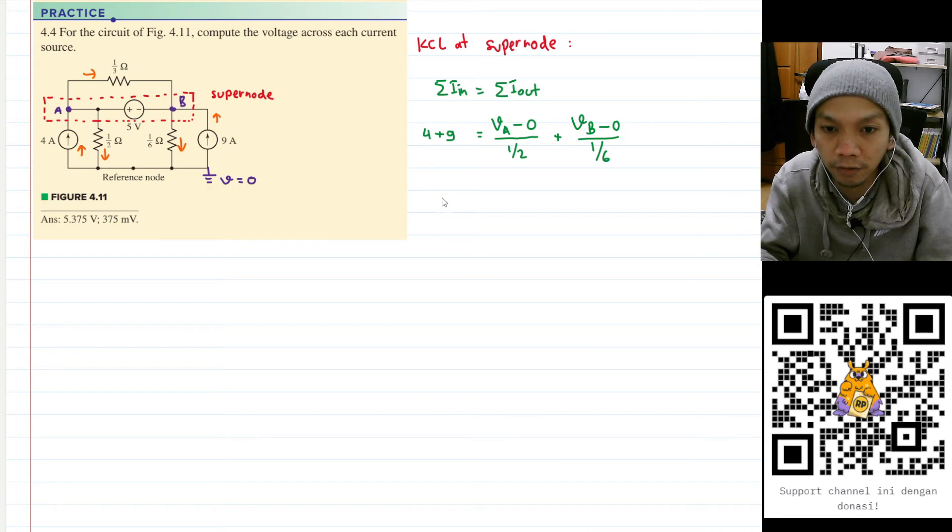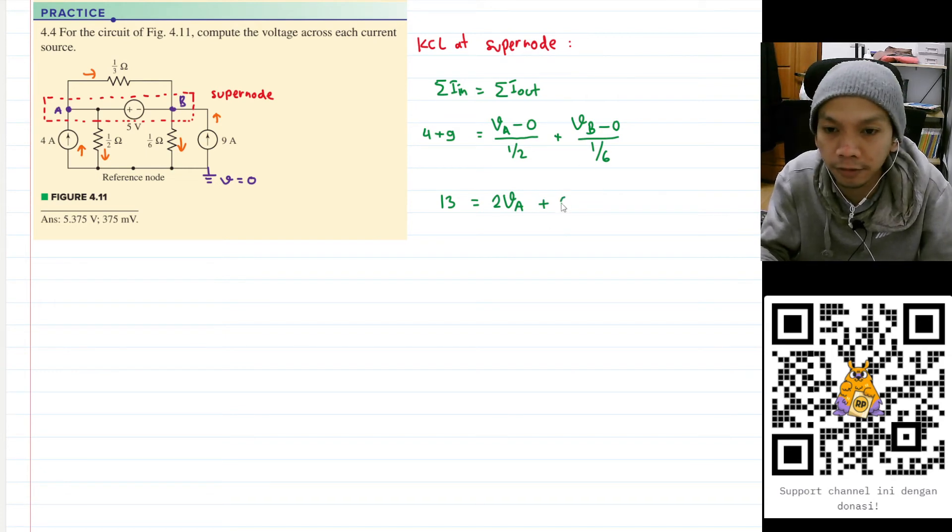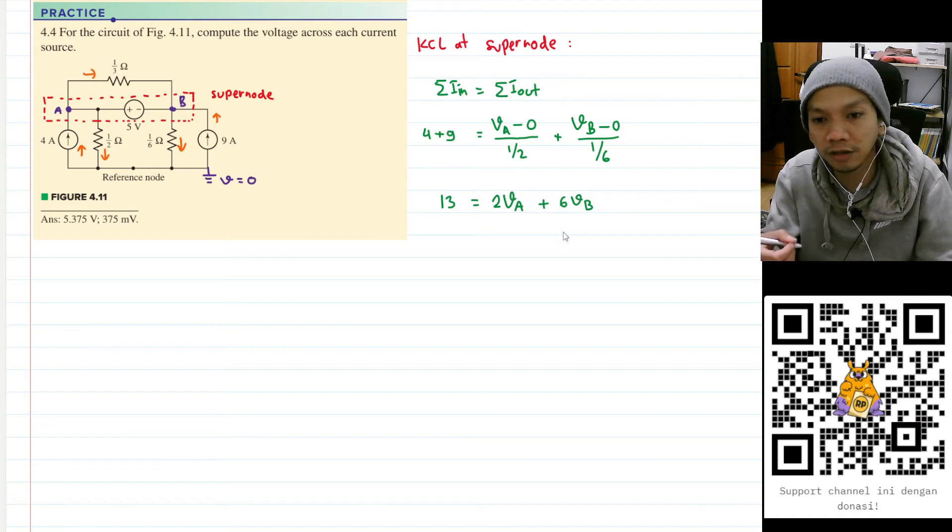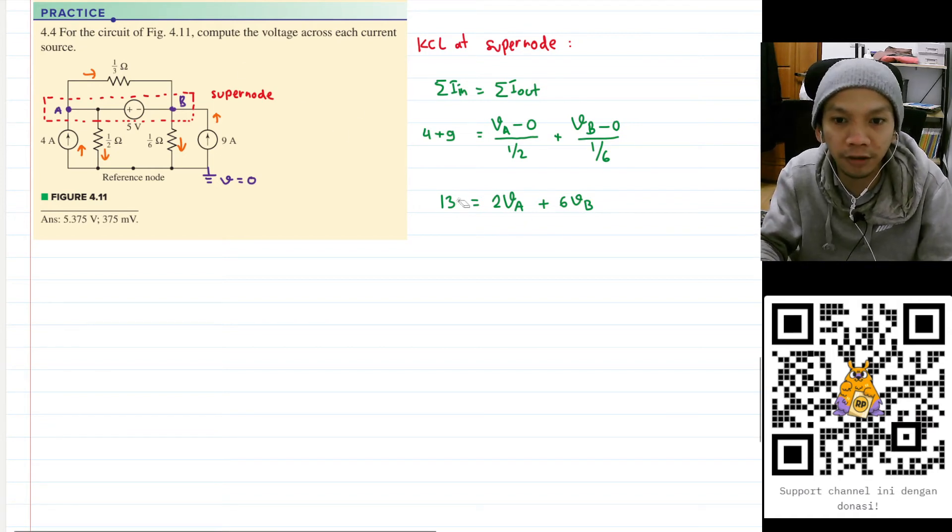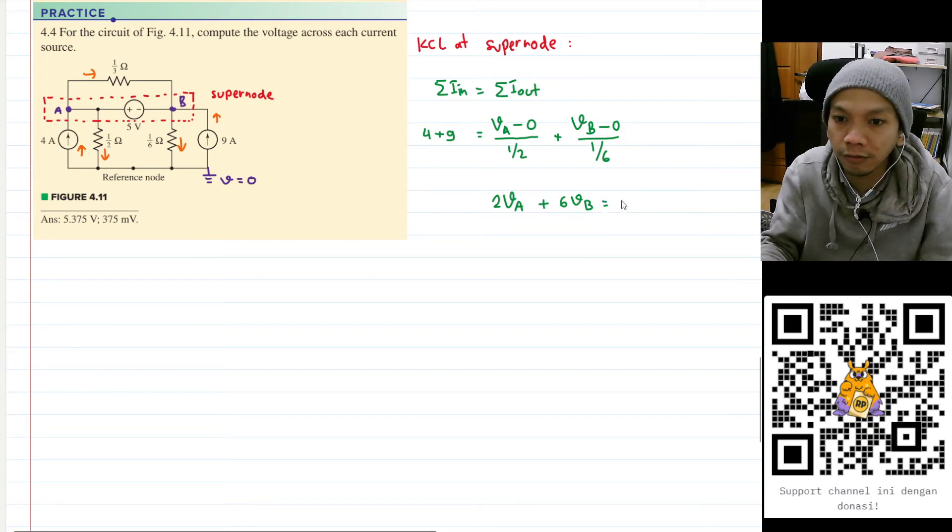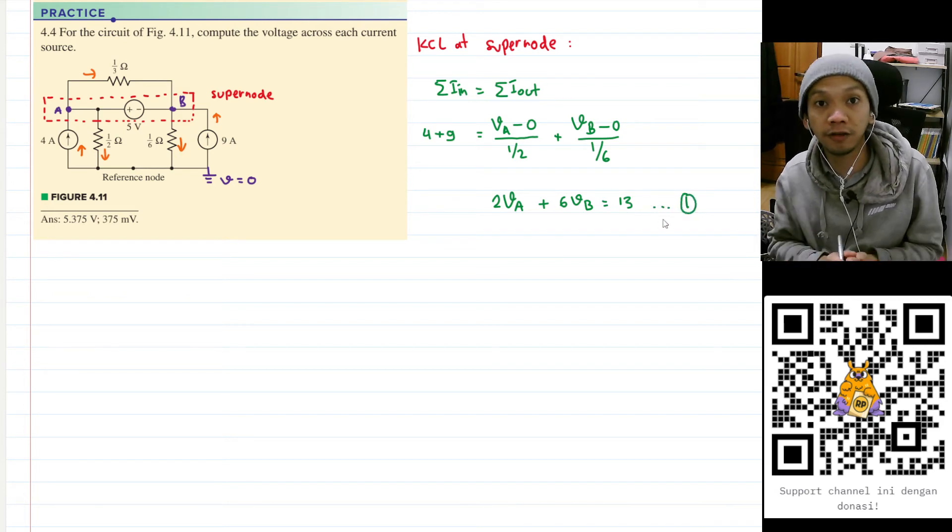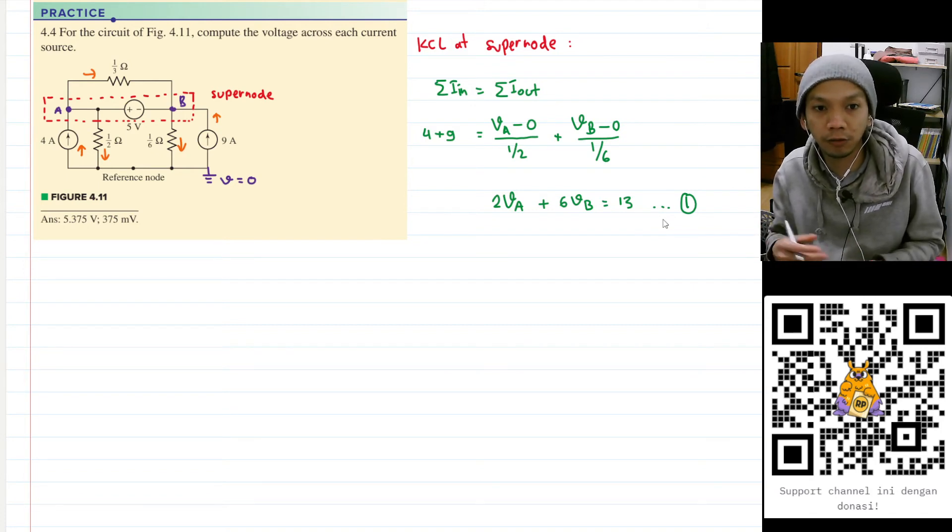And so I will have 13 on the left hand side, and then this will become two VA and this will become six VB. Yeah, I don't think we can do anything much besides moving this 13 to the right hand side. And let's save this as equation number one. Okay, so we have two variables but one equation. We need one more equation.